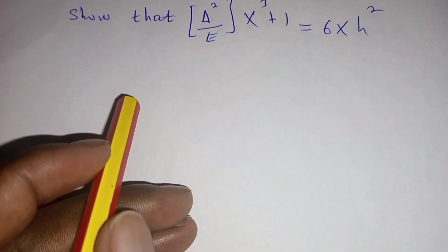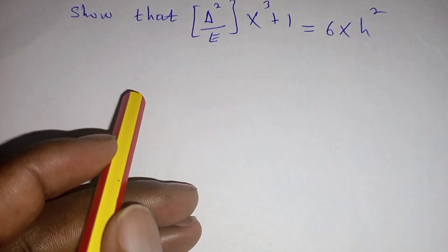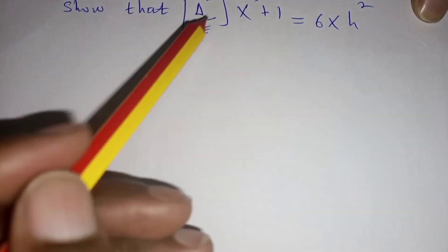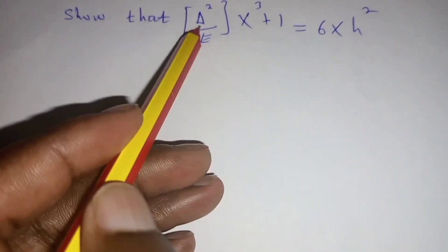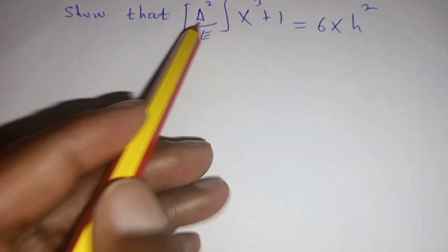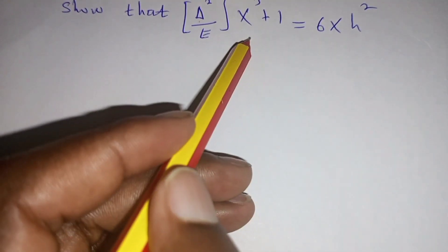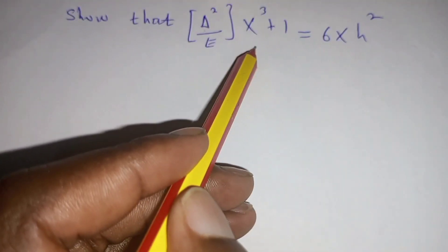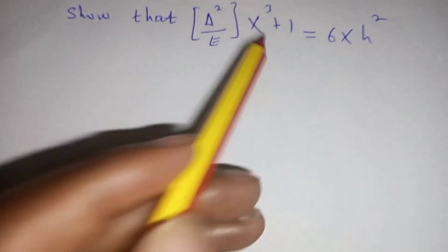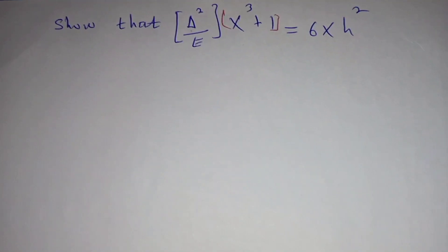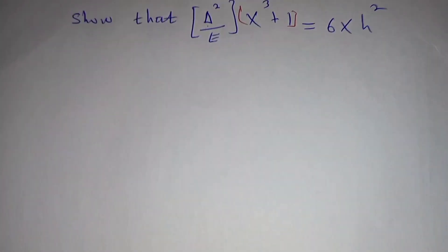We are looking at the properties of the shift operator. We are going to show that the one difference operator squared divided by E operator multiplied by x squared plus 1, this one is with bracket, is equivalent to 6x squared.